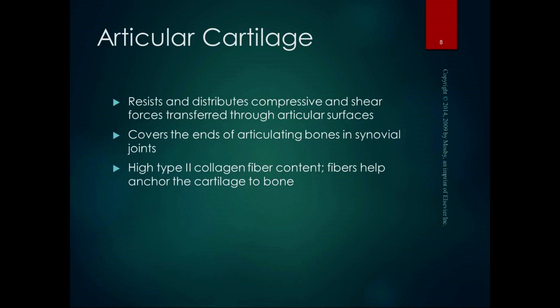Articular cartilage covers the ends of the articulating bones in synovial joints, with a lot of type 2 collagen fibers that help anchor the cartilage to the bone. If you've ever cut apart a whole chicken, their sternum is kind of pointy — it's made out of that sort of cartilage. It's that bendy kind of connective tissue, so it has some elasticity to absorb forces.